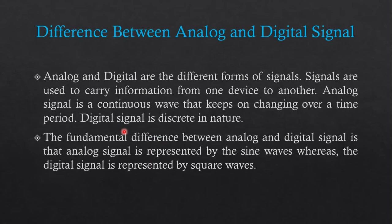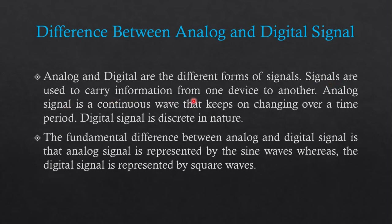Starting with the difference between Analog Signal and Digital Signal. As we already know, the Analog Signal is Continuous with Time and the Digital Signal is Discrete with Time — we already studied this in our first video. Analog and Digital are different forms of Signal. Signals are used to carry information from one device to another, and a signal can convey information from one point to another point.